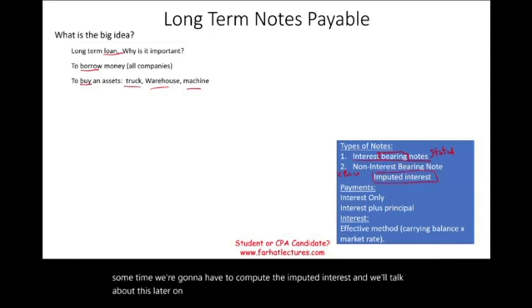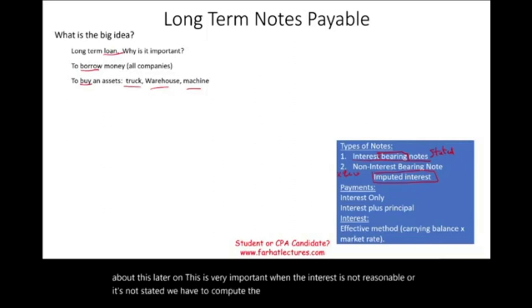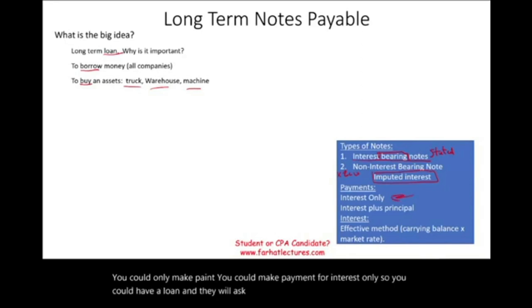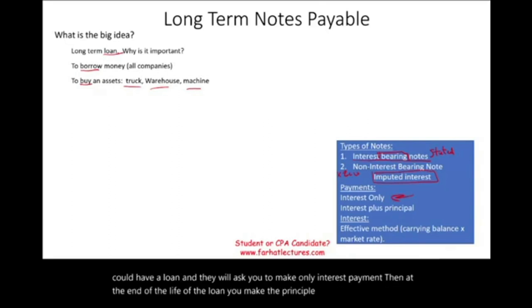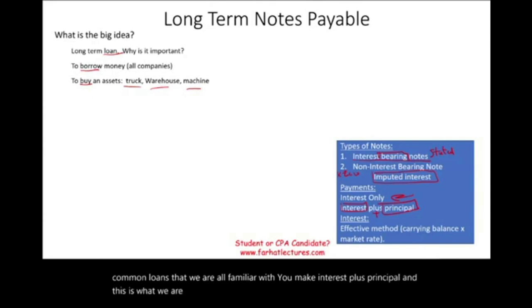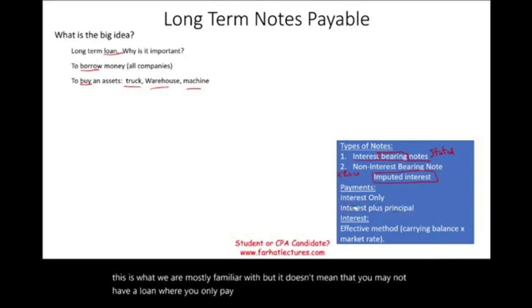This is very important: when the interest is not reasonable or not stated, we have to impute the interest. Also, when we have a loan, you could make payments for interest only — paying only the interest throughout the loan period and then paying the principal at the end. Or, more commonly, you make interest plus principal payments combined.